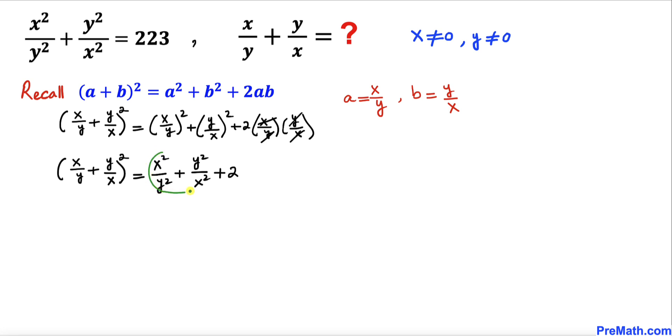And now we can see this x²/y² + y²/x² is equal to 223 from our given equation.